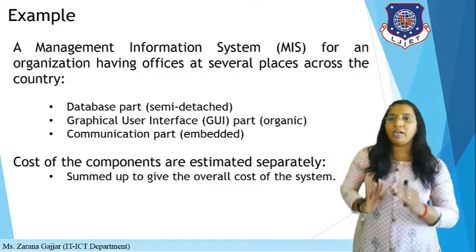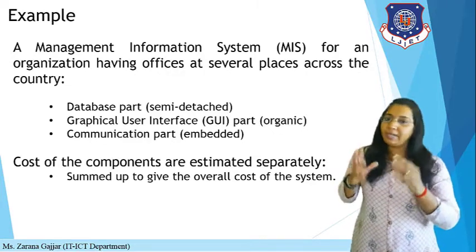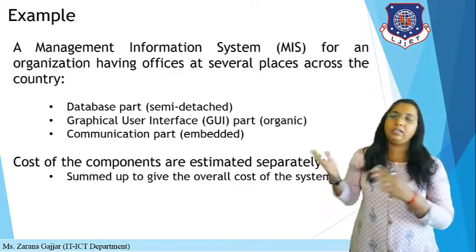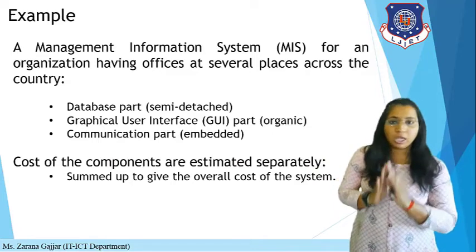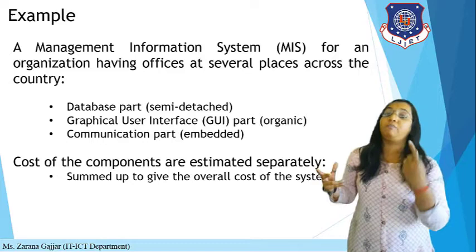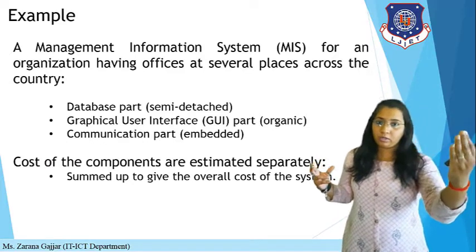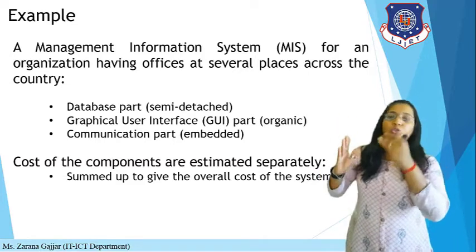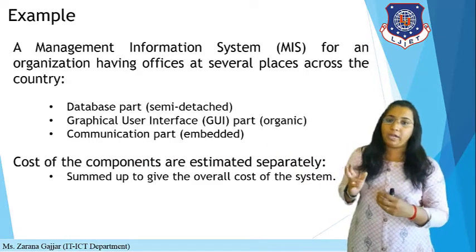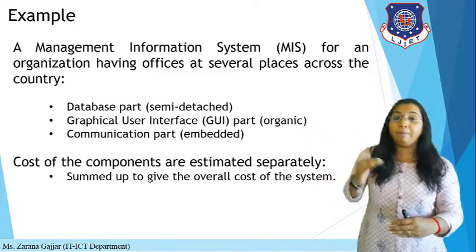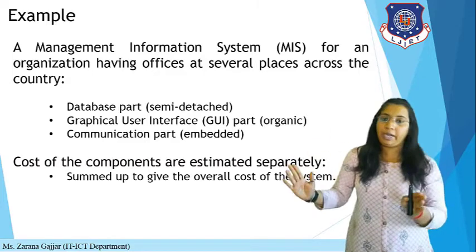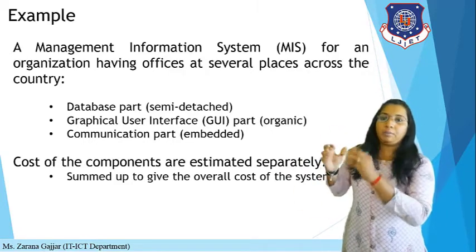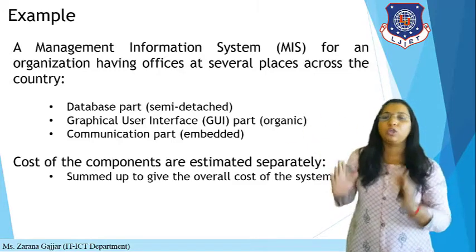The database part is medium-scale, so semi-detached type is used. The GUI is basic — a designer with proper skills can handle it — so organic type is used. Communication is very complex with many branches having different parameters, so embedded type is used. The cost of each component is estimated separately using the 15 parameters, and then at the end, the database, GUI, and communication costs are summed up to get the actual total cost of the system.